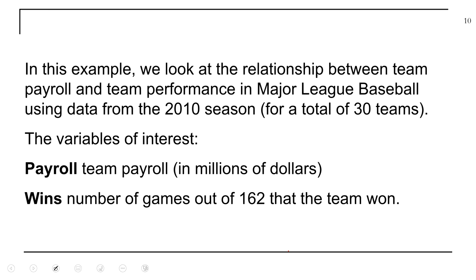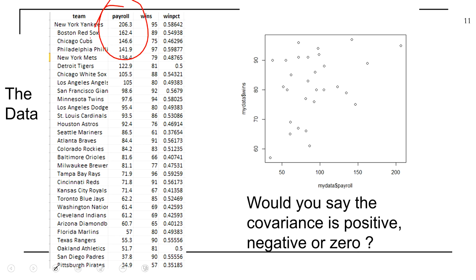As an example, we have Major League Baseball data — winning percentage and payroll. You can see some teams that pay a lot and don't win many games, and some that pay a little and win a lot. Would you say there's a positive, negative, or no relationship? You might want to say 'slight,' but we're not allowed to use the word 'slight' with covariance since there's no measure of strength. You would say there appears to be a positive relationship between wins and payroll.